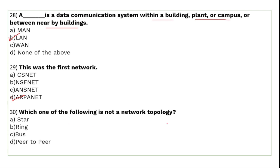Which of the following is not a network topology? Network topology refers to the arrangement of devices within a network. Star and ring are topologies, but peer-to-peer is not a topology — it is a network architecture.